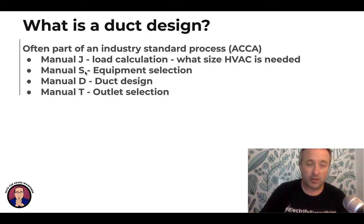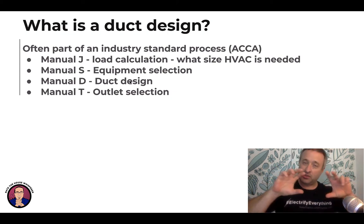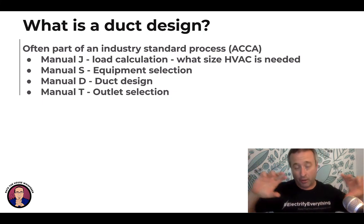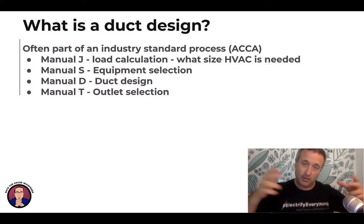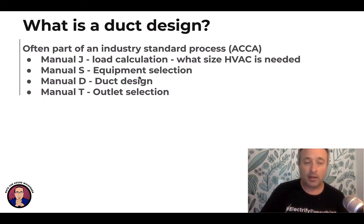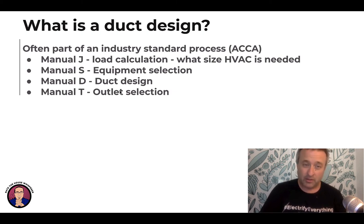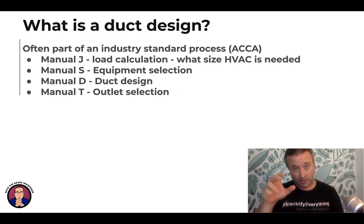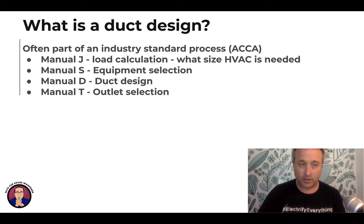Once you get Manual S done and select equipment, you do Manual D, which is the duct design. That determines what size trunks are, what size ducts need to come off to the different rooms, and how much airflow the room should get based on how many BTUs — how much heat or cool they need. Manual T is not done very often, but that is outlet selection: what kind of vents are you actually putting in the ceiling, walls, or floor. So that's Manual J, S, D, and T.